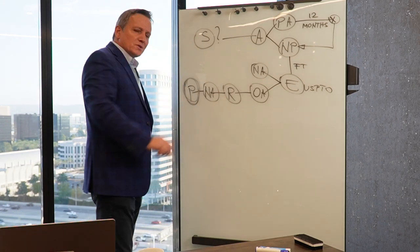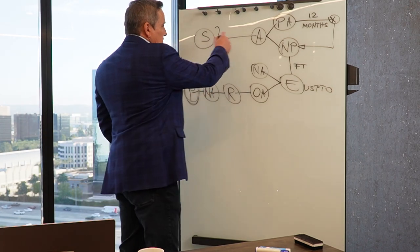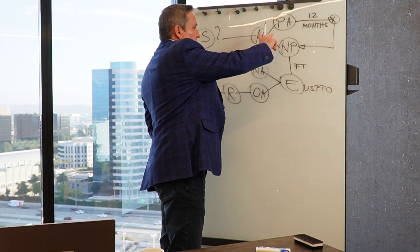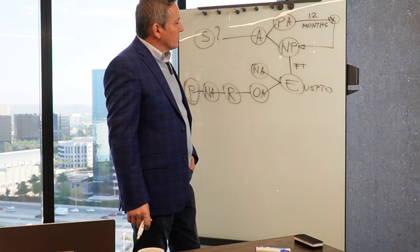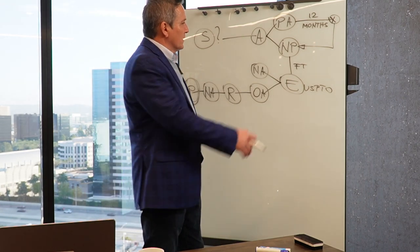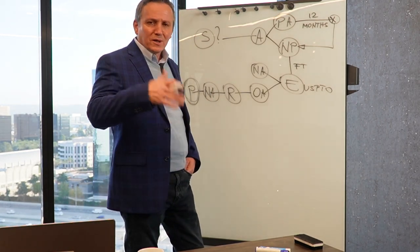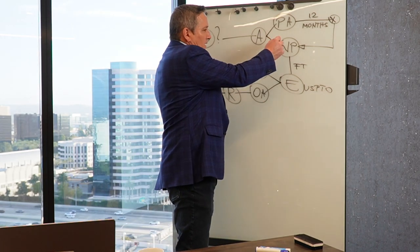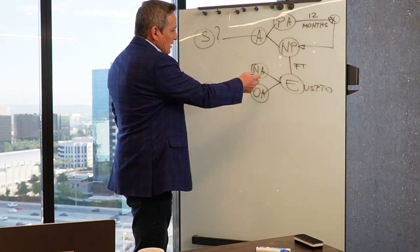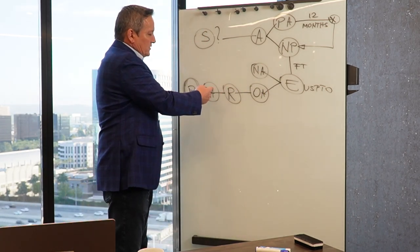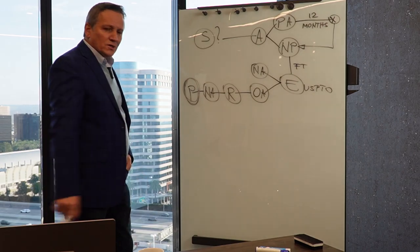To recap: the first optional step is to do a patentability search and analysis. Next, file an application — you can start with a provisional, giving you patent pending status for up to 12 months, or go straight to a non-provisional if the invention is fully developed and the budget is not a problem. You can even expedite the non-provisional via fast track. It goes to the examiner and you get either a notice of allowance or an office action, and you work with the examiner until you get your patent.